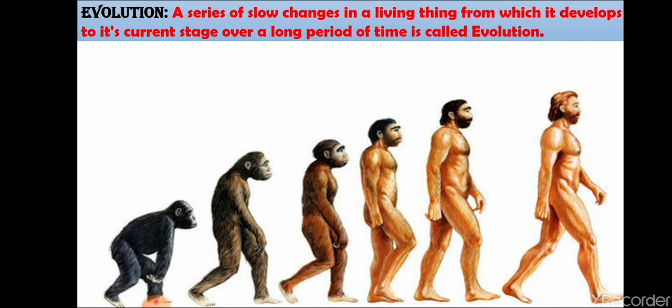Firstly, evolution. What is evolution? You might have heard that humans evolved from the apes. Evolution is a series of change — how human beings developed from apes. It is the process of change, or a gradual process of change and development of something. So, evolution is a series of slow changes.